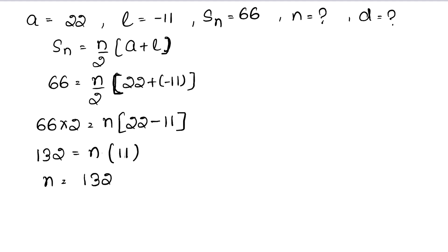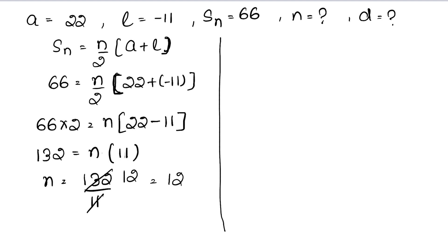132 divided by 11 — divide mein chala gaya kyunki n ke saath multiply mein tha, toh doosri side divide mein chala gaya. 11 ones are 11, 11 twos are 22 — toh n humara aa gaya 12.